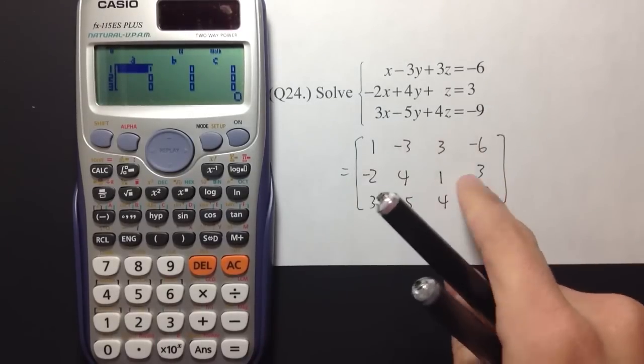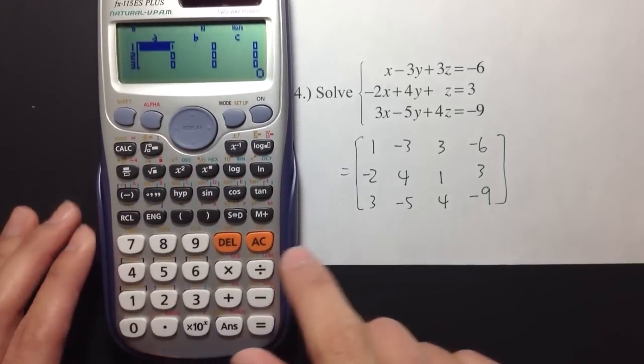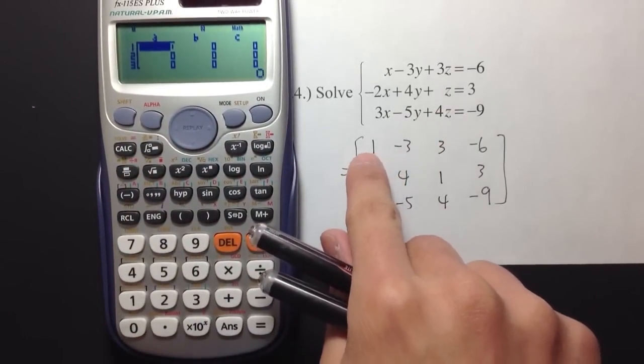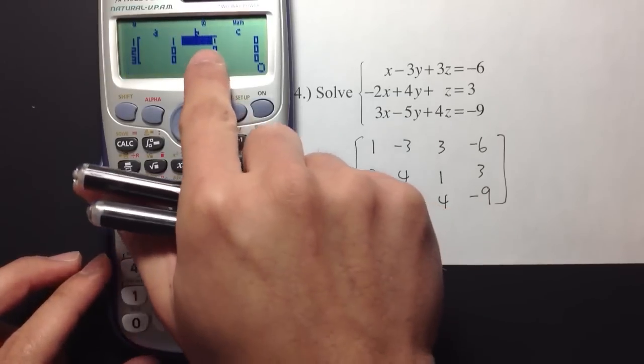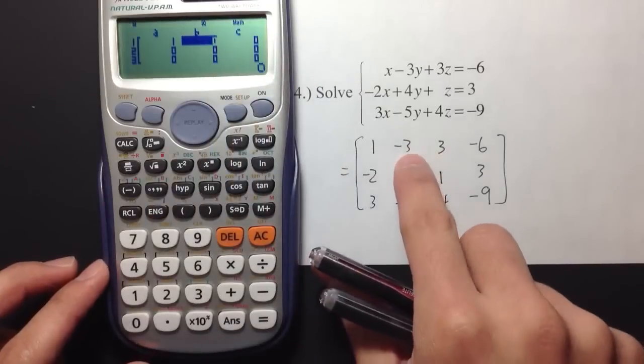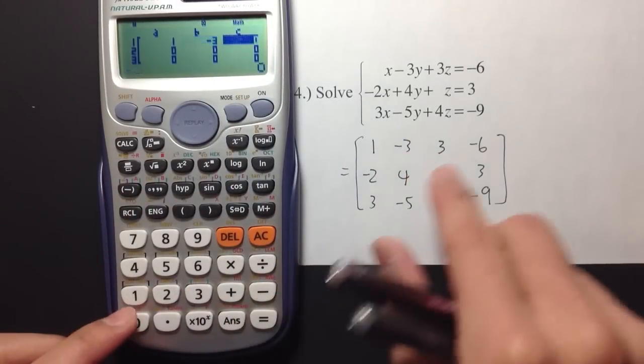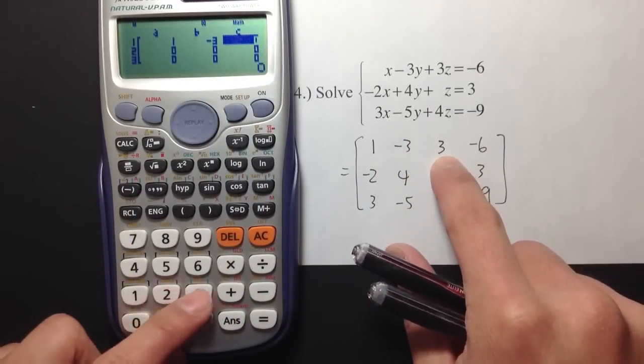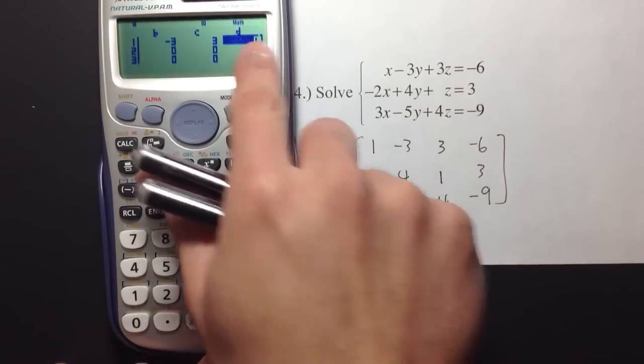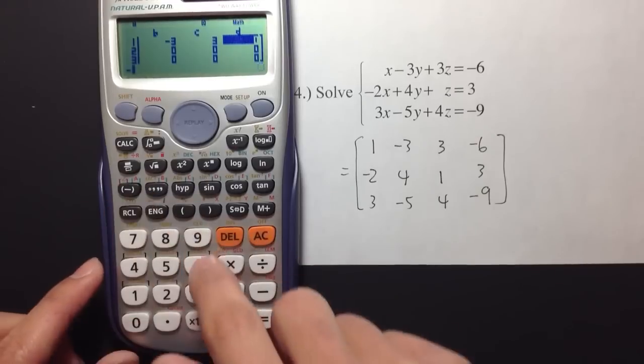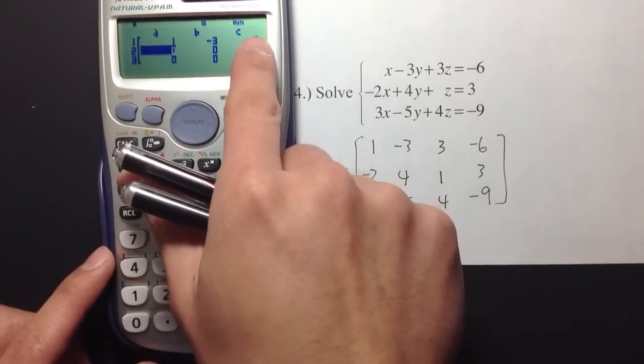So, these are the numbers that we are going to enter onto the matrix right here. We are just going to enter this from left to right. So, I'll enter 1 and then hit equal, and it will jump to the next place. I'm going to enter negative 3, use this for negative 3, equal. And then, for the next number, I will have to hit 3, equal. And then, the next number is negative 6, negative 6, equal. So, I finish with my first row.